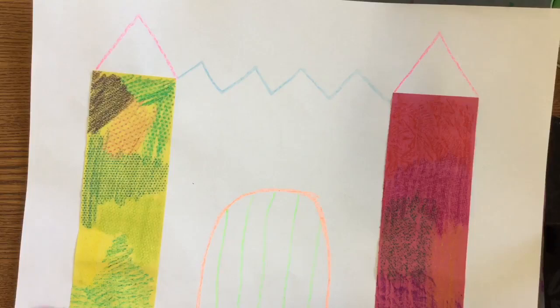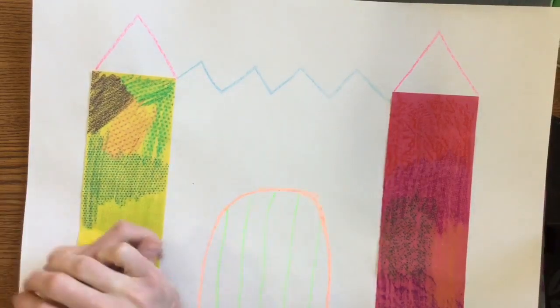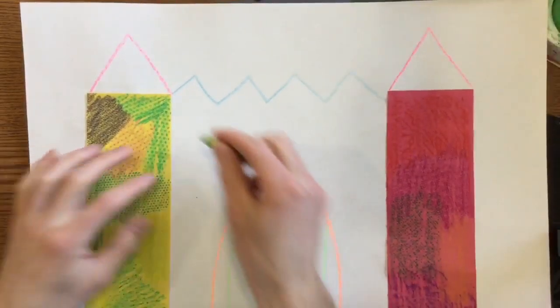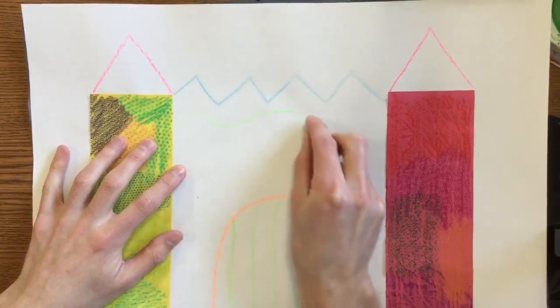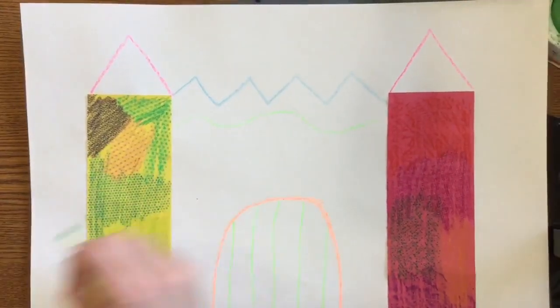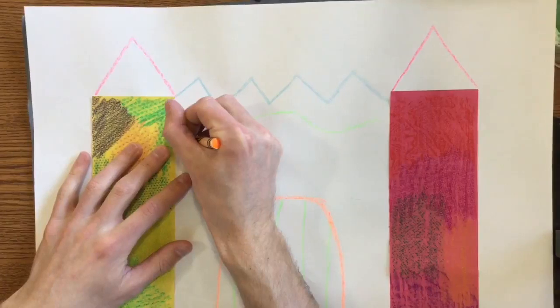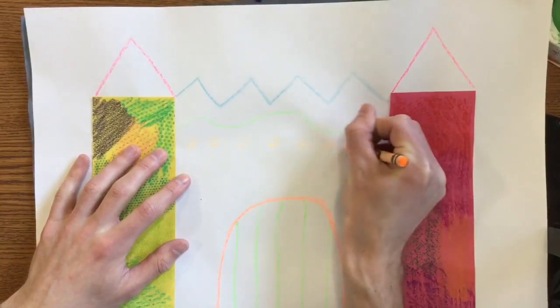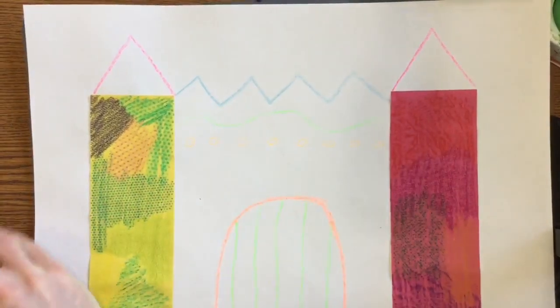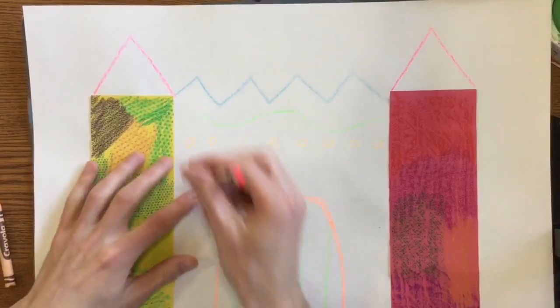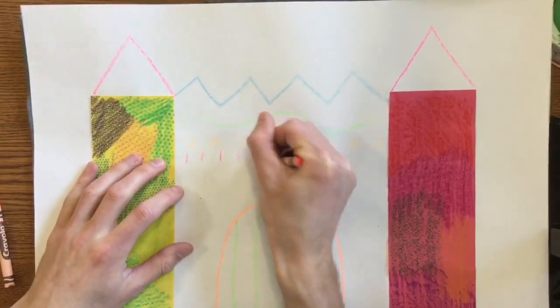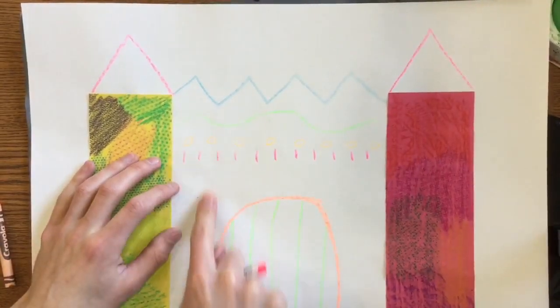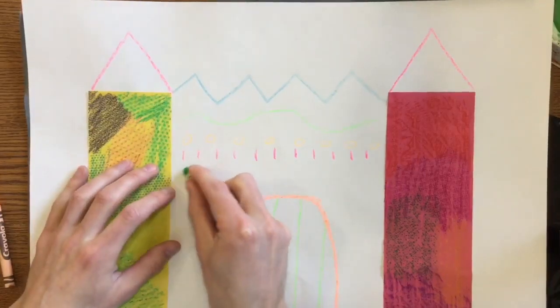Now we're going to go ahead and we're going to add a pattern using three different things. You can use lines and shapes with that pattern. So maybe I want to do a curved line. Maybe I want to do some circles under that. Maybe I want to do a bunch of vertical lines. So I've got three different things now. Now I'm going to repeat that going all the way to the bottom of my castle.